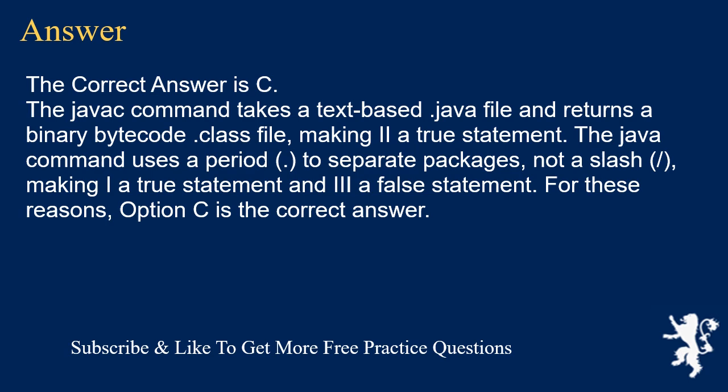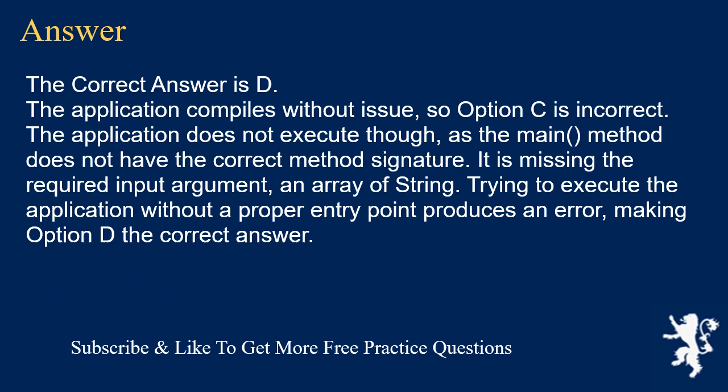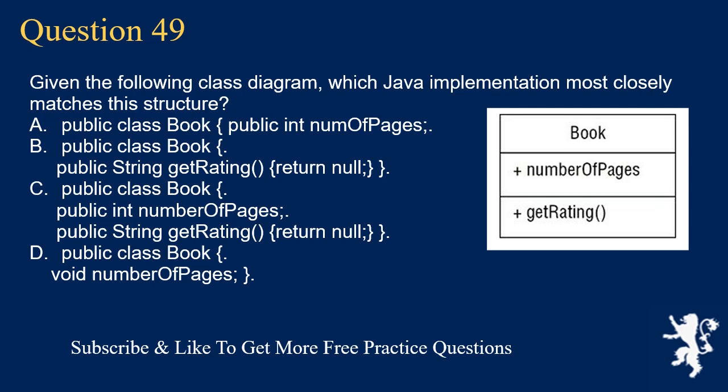Question 48: What is the result of compiling and executing the following application? Package forecast, public class Weather, private static boolean heatwave = true, public static void main() { boolean heatwave = false; System.out.print(heatwave); }. Options: A) true, B) false, C) does not compile, D) compiles but throws an error at runtime. The correct answer is D. The application compiles without issue. However, the main method does not have the correct method signature — it is missing the required String array input argument. Trying to execute the application without a proper entry point produces an error at runtime.